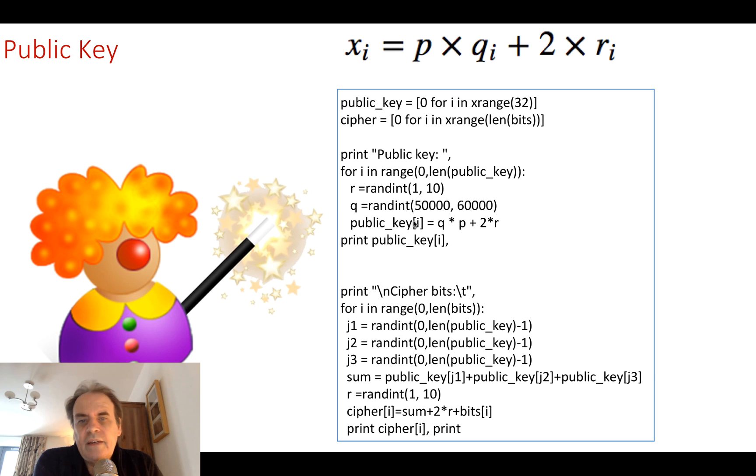Create a number of public key values, and then that's going to be used as our public key. We then pick off a number of those, create a sum of them, and then add that on to our cipher, and those become our cipher bits.